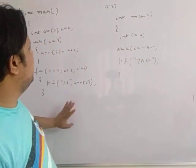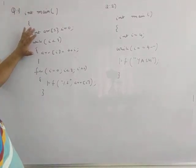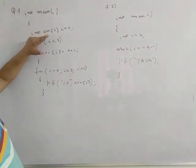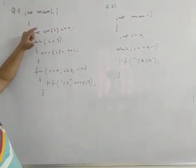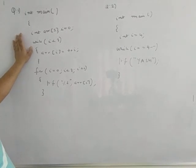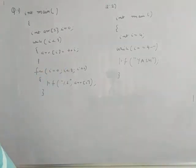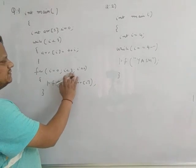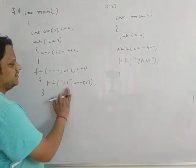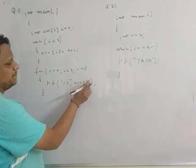So for the first question: I have declared an array of 3 integers — `int arr[3]`. Then `i = 0`, `while i < 3`, `arr[i] = ++i`. Then a second loop: `i = 0`, `while i < 3`, `i++`, `printf("%d", arr[i])`.